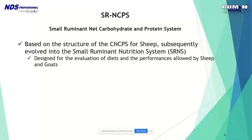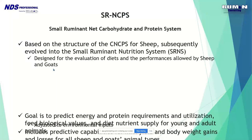The system for small ruminants is based on the structure of the original CNCPS for sheep. Subsequently, the system evolved into the small ruminant nutrition system and was designed to evaluate diets and performance for both sheep and goats. The sheep came first, and everything done for goats was an adaptation with very important adjustments to the sheep system.